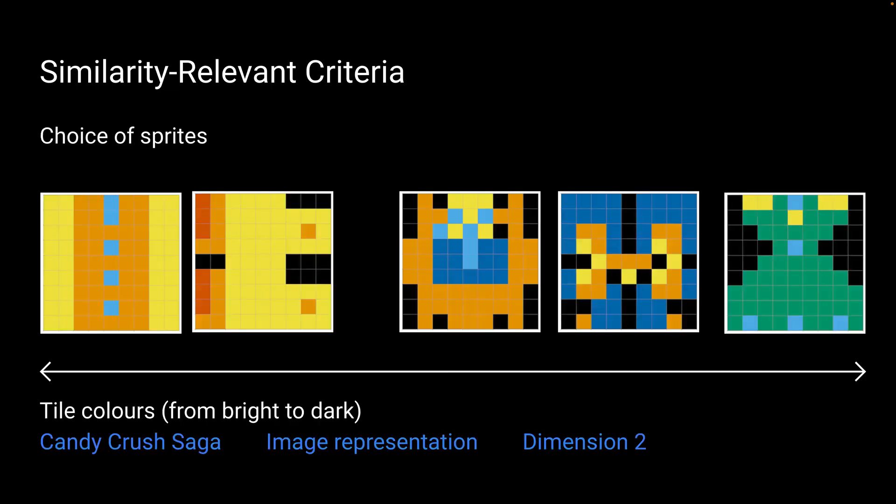Participants also highlighted the choice of sprites to be relevant criteria. For example, here tile colors from bright to dark. On the left-hand side, quite bright colors of the sprites, and they become darker as we go to the right. Similarly, they highlighted colorfulness and brightness as similarity-relevant criteria.